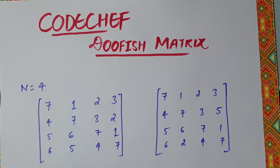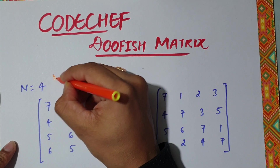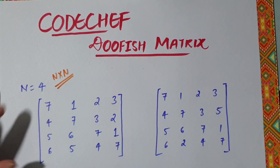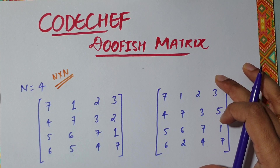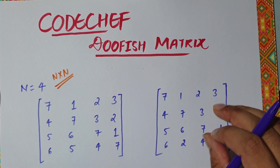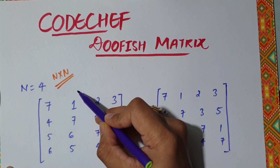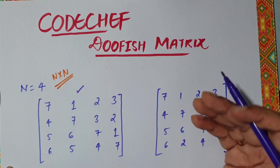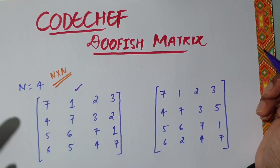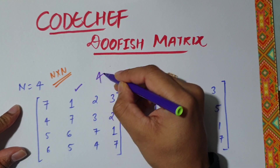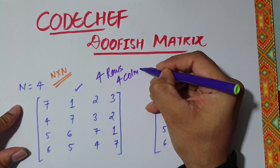For n equals four, we have an n×n matrix. Here is a Do Fish matrix I have written, and this is also a Do Fish matrix for n equals four. Note that for a given n, there could be many Do Fish matrices. It is not essential that a pattern found in one matrix will be observed in another, since these are two different matrices.